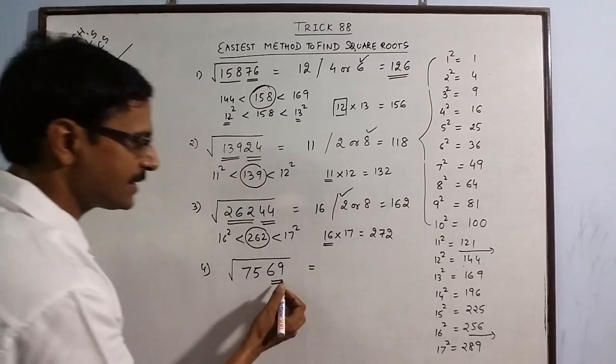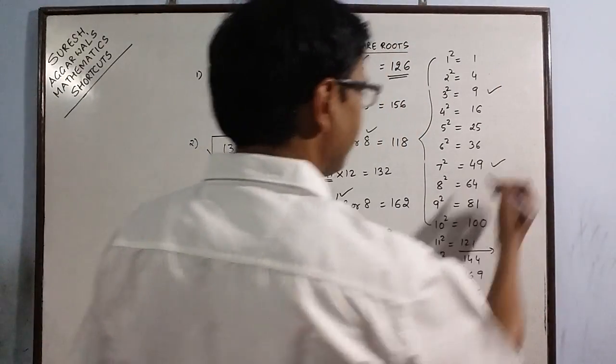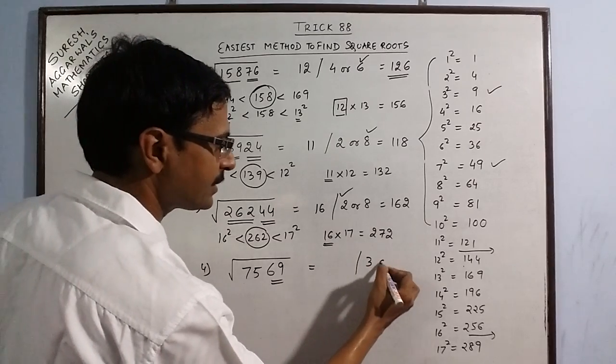Say we have 7569. So unit digit is 9. Unit digit 9 occurs in 3 and 7. So your second part will be either 3 or 7.